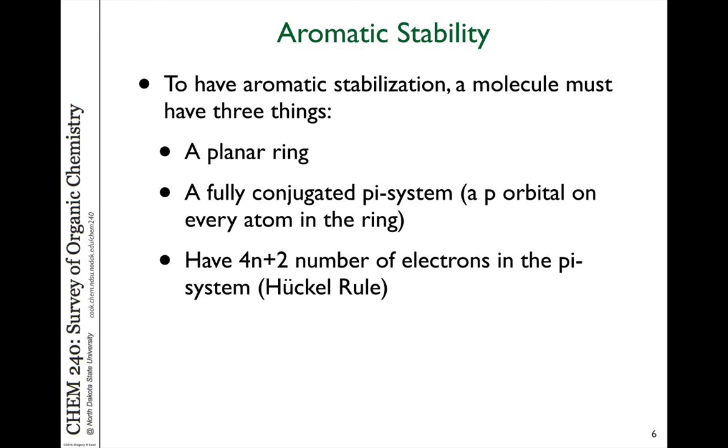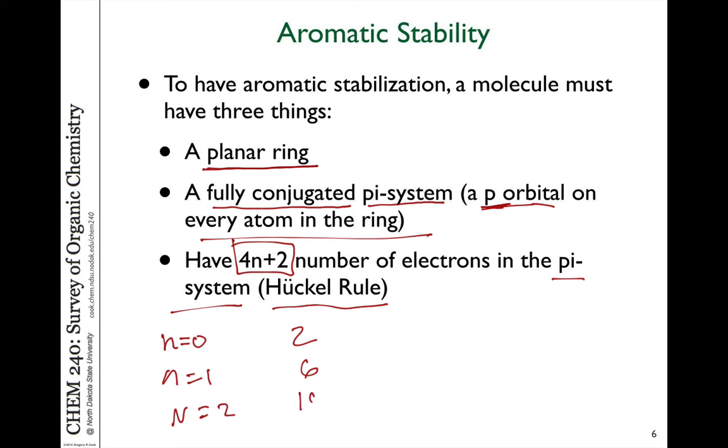We can recognize aromatic compounds because they have to satisfy three requirements. They have to be in a ring that's completely planar. It has to be a system which is fully conjugated. So we have pi system, which is conjugated, or in other words, a p orbital on every atom of that ring, whether it's a carbon or a heteroatom. And in order to have this aromatic stabilization, it has to follow the Huckel rule. That is, the number of electrons that are in that delocalized pi system has to be 4n plus 2, where n is any integer. So if n equals 0, the Huckel rule would say you need 2 electrons. If n equals 1, that would be 6 electrons. If n equals 2, that would be 10 electrons. Those would all have aromatic stabilization.